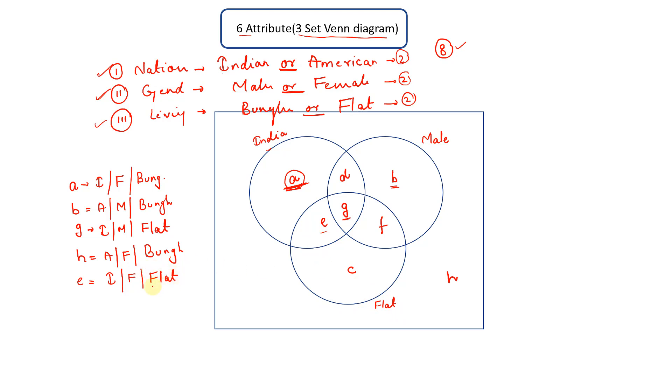Simple, isn't it? So this is how we represent three set Venn diagram in which each set has two attributes and we have the condition of OR. Many people do not know this concept.